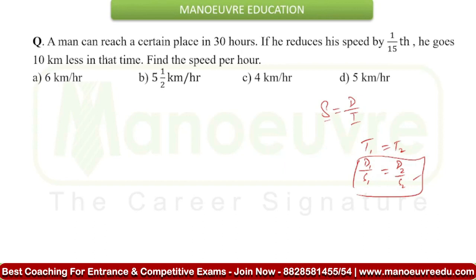If you don't know the distance, you can assume that the distance we cover is x km. So x km is the distance, and S1 is the speed. The first speed was 15. You can write here 15. After that, the speed is reduced by 1/15th, so the new speed becomes 14.